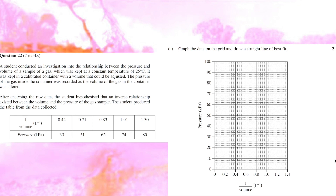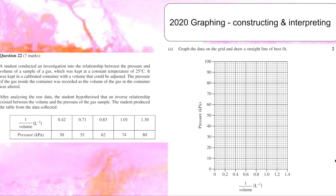Question 22 part A is simply drawing a graph. The data given uses one-over-volume, but luckily the graph section provided has that axis labelled already, so all you have to do is take the data and plot it. It's reasonably simple, but it's a skill you should work on. If possible, depending on the nature of your data points, draw a line of best fit using a ruler — as long as your data suggests a straight linear relationship, that's what you do. Graphing, structuring, and interpreting graphs are all important skills.